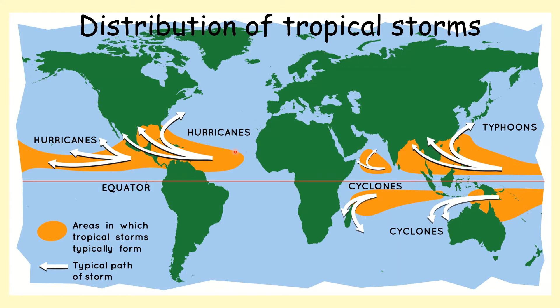I remember where hurricanes are and then remember them alphabetically: C for cyclones and then T for typhoons. They're called tropical storms because they're between the Tropic of Cancer, which is up here, and the Tropic of Capricorn here to the south of the equator.